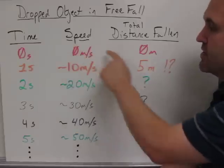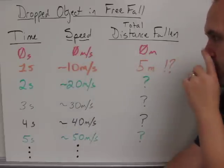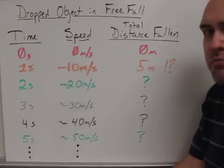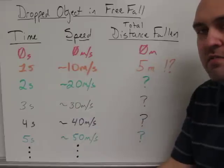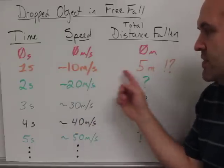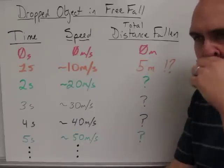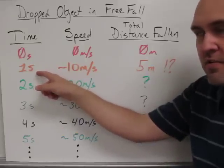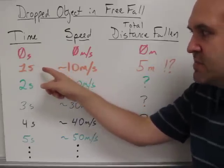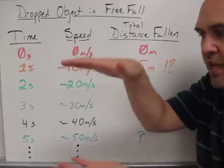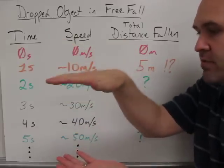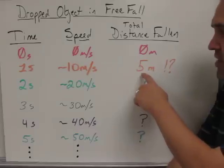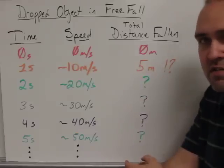And of course at zero time it would fall zero distance. At one second, many people assume that it would fall 10 meters because it's going 10 meters per second after one second. But what students that think that get confused about is that it's not going 10 meters per second the entire second that it falls. Remember, it starts at zero and it speeds up to 10 meters per second. So in between it had all the velocities between zero and 10 meters per second. And so it turns out that it only falls five meters in that first second. It doesn't fall 10.